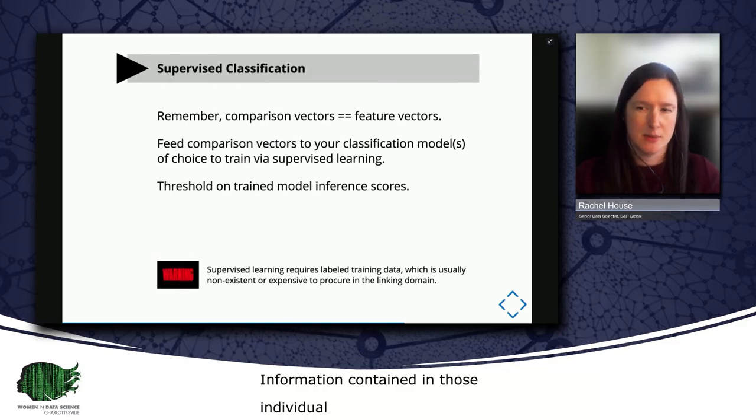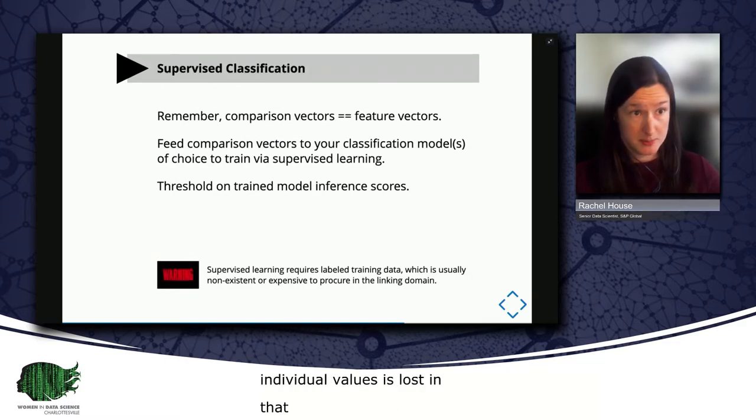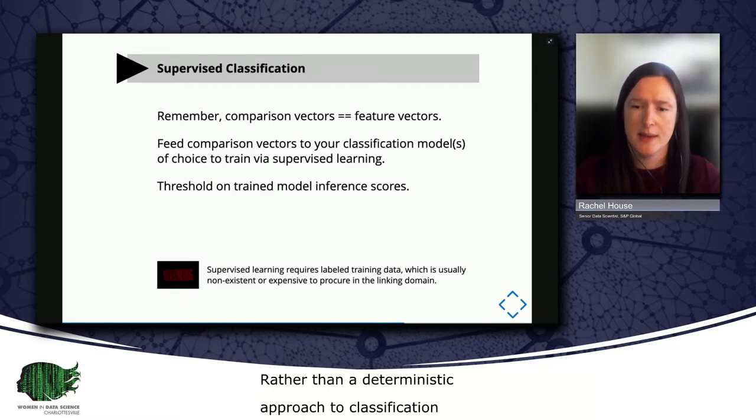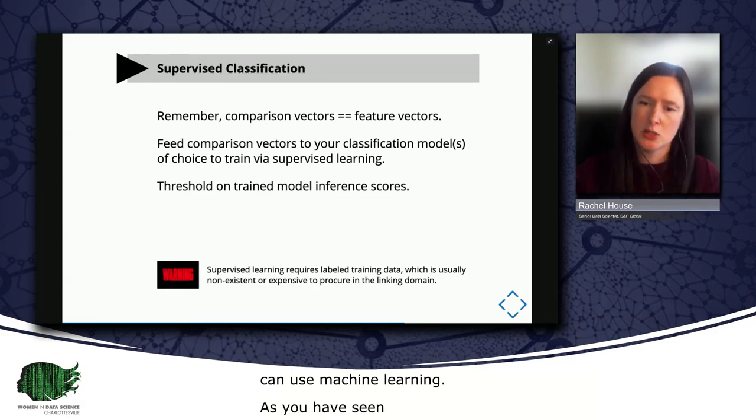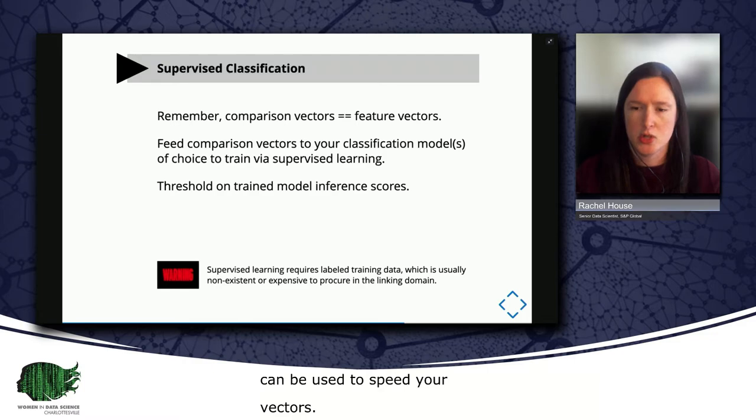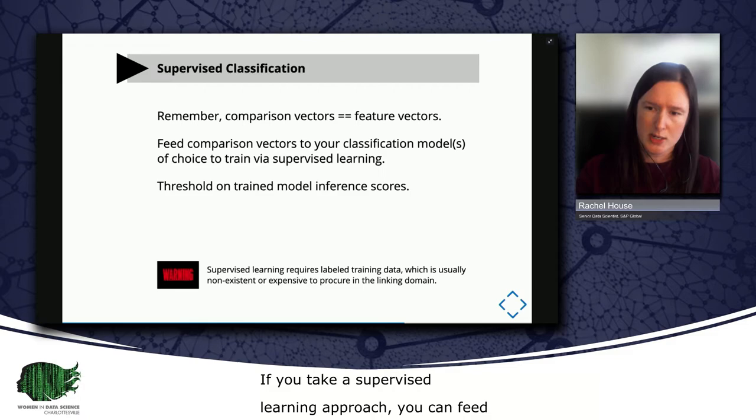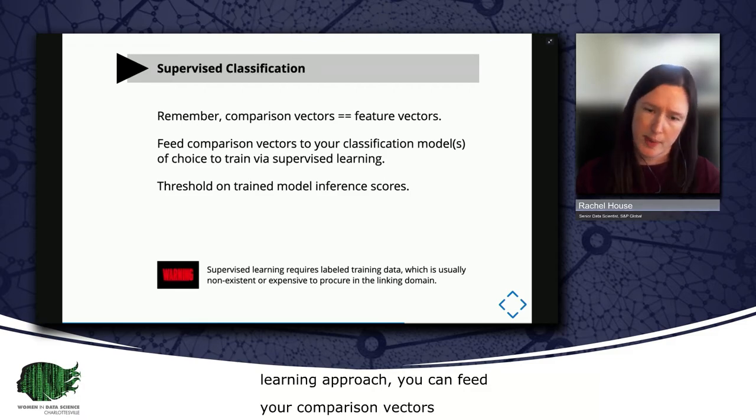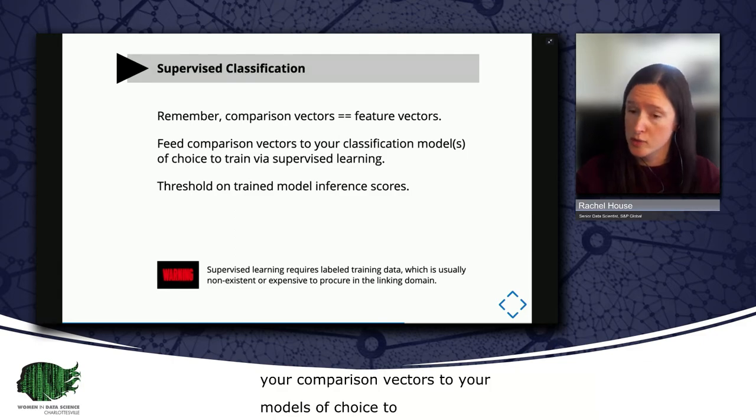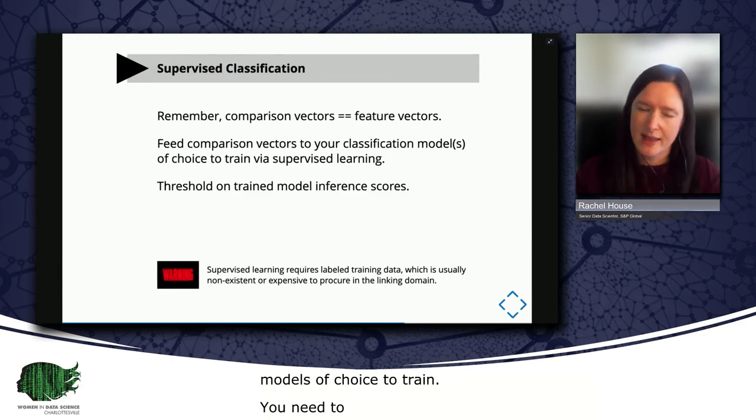Rather than a deterministic approach to classification, we can also use machine learning. As you've seen, the vectors generated in the comparison step can be used as feature vectors. So if you take a supervised learning approach to classification, you can feed your comparison vectors to your models of choice to train them. And then you can use the model inference scores plus a threshold to classify your new record pairs. Note that for supervised learning, as you would expect, you also need to know the appropriate labels for your comparison vectors, true link or true non-link. And you might not always have that ground truth data.